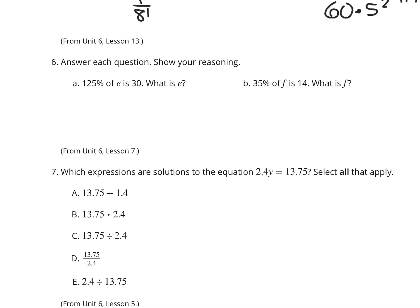Question 6. Answer each question. Show your reasoning. 125% of E is 30. What is E? Well, if we take our decimal method, we have 1.25, 1 in 25 hundredths, times E equals 30. And so if I divide both sides of this equation now by 1 in 25 hundredths there, 30 divided by 1 in 25 hundredths is 24. So E is equal to 24.